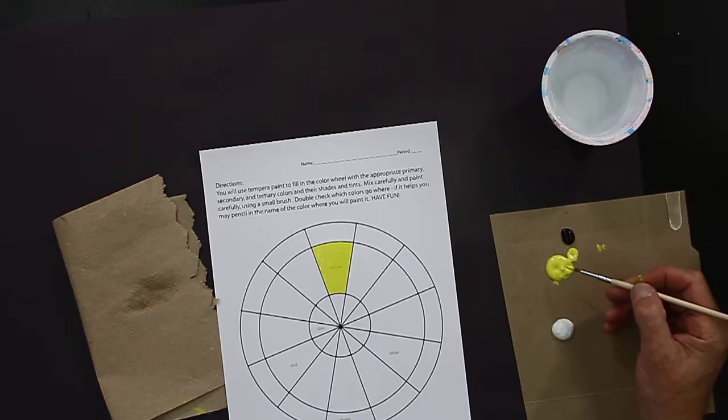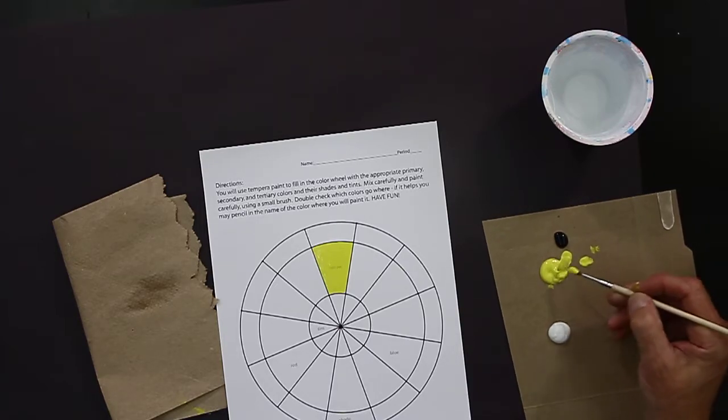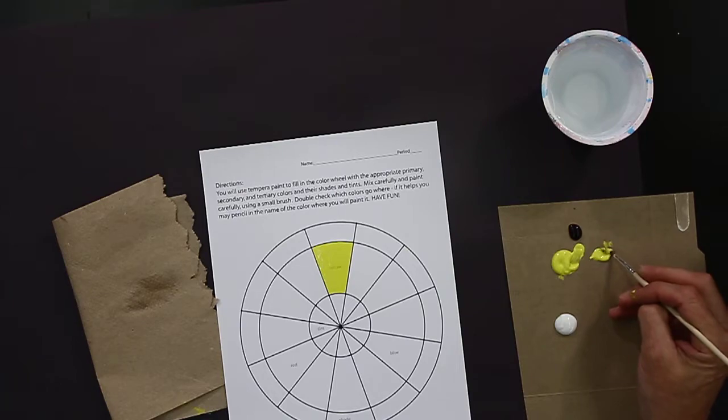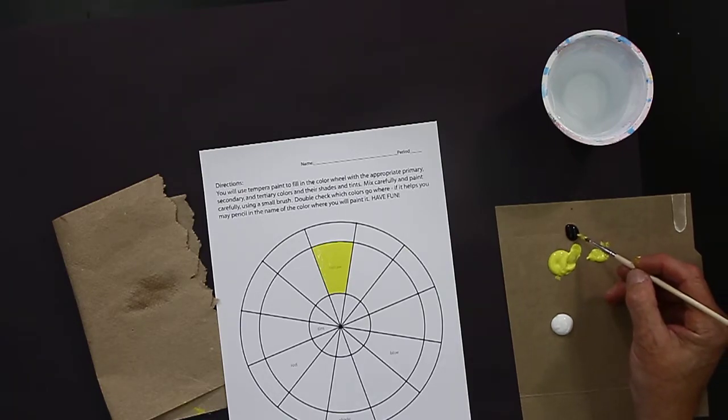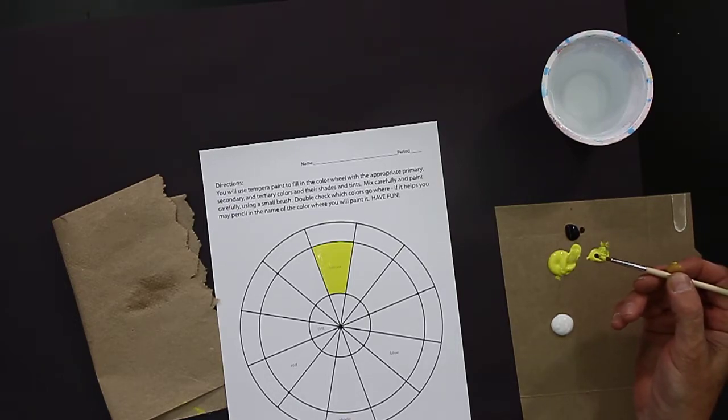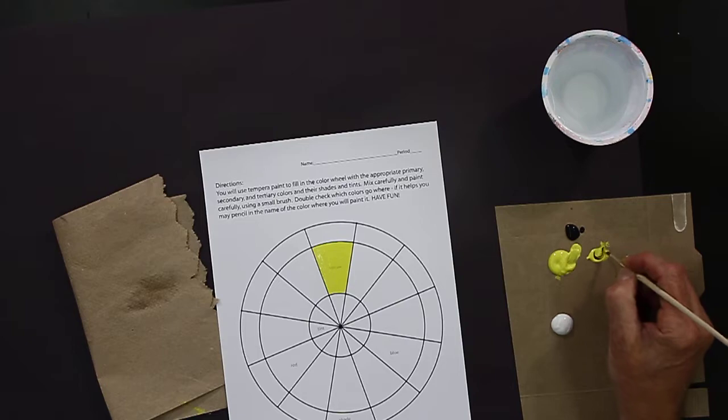So I already have yellow on my brush. I'm going to take a little bit of extra yellow and put it over here to create a shade of yellow. And you'll see as I do this that I take the tiniest little bit of paint on the tip of the brush to create this shade. And you'll see how quickly it affects the yellow.